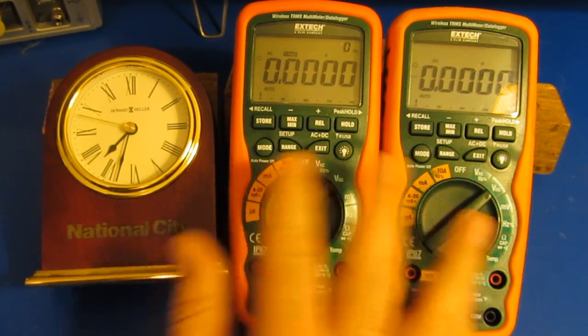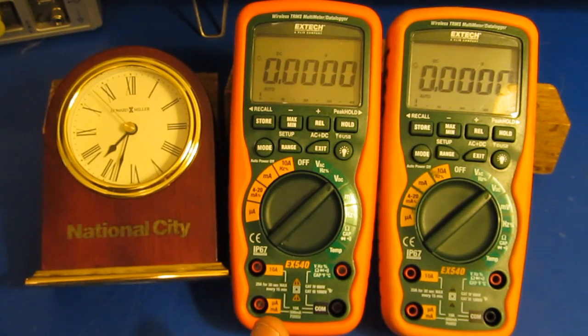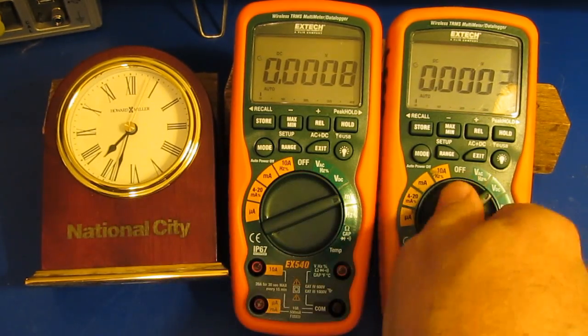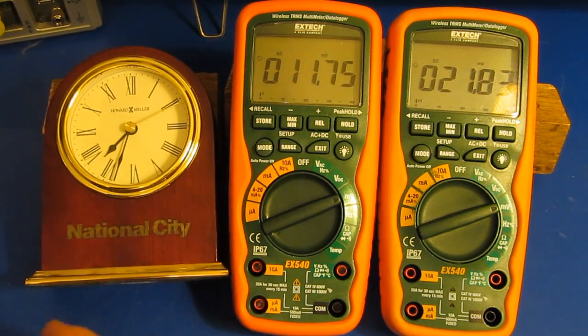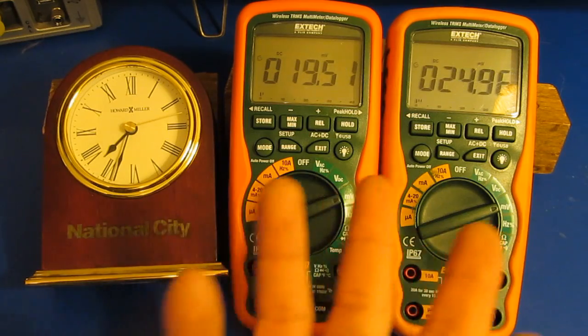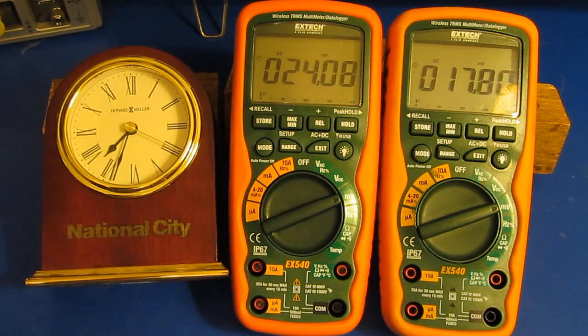So you can see if I select both meters at DC volts, they both read zero volts roughly. Just fluctuating roughly 100 microvolts. In the millivolt range, you can see it's kind of varying around about 20 millivolts versus roughly 17. So they're within the same ballpark.